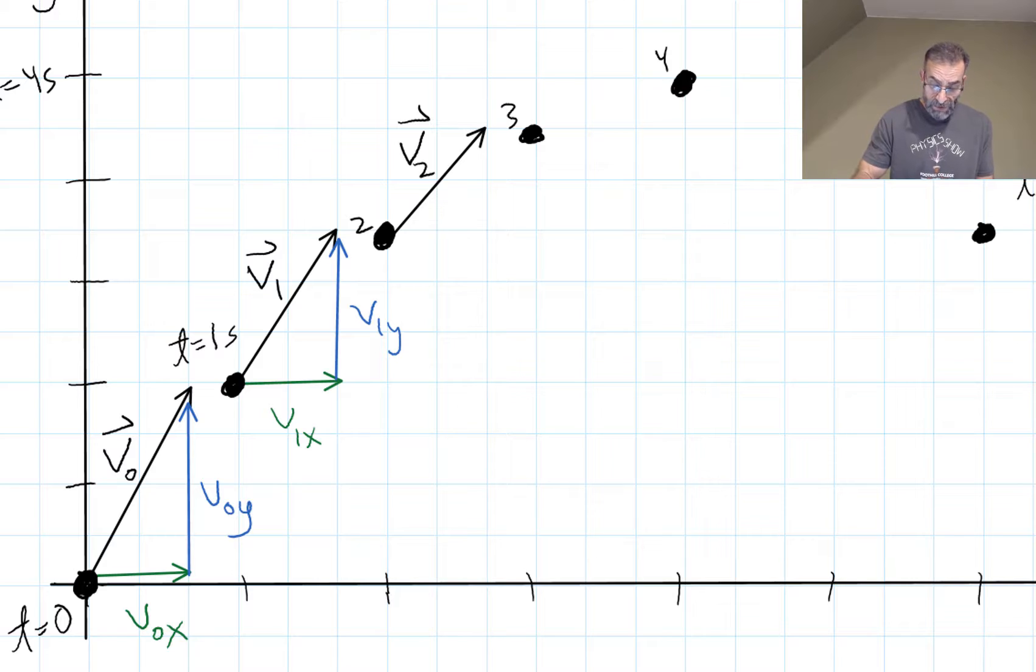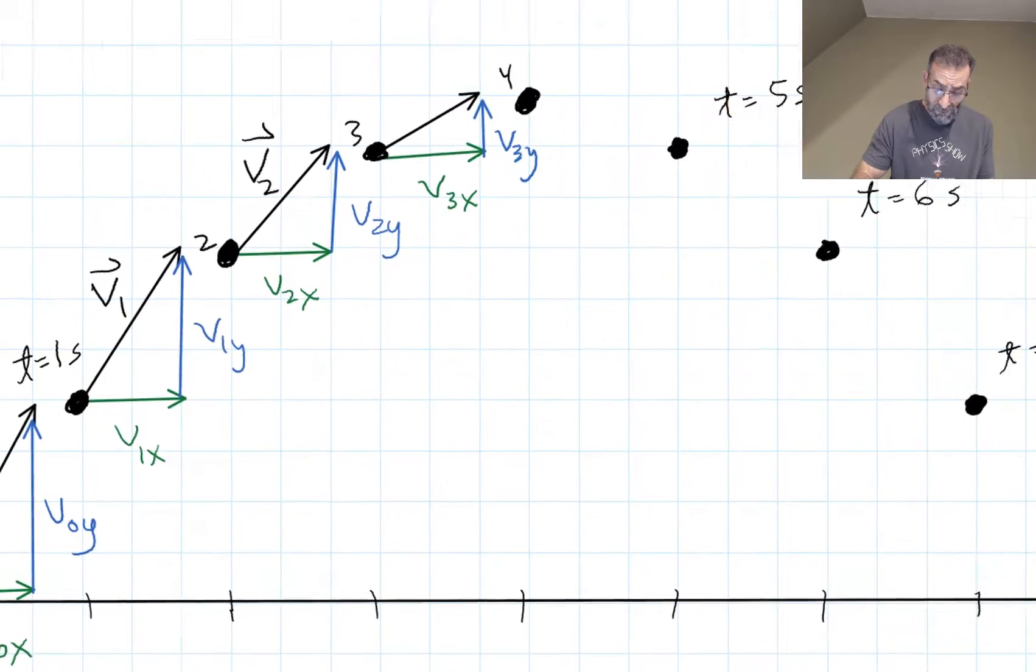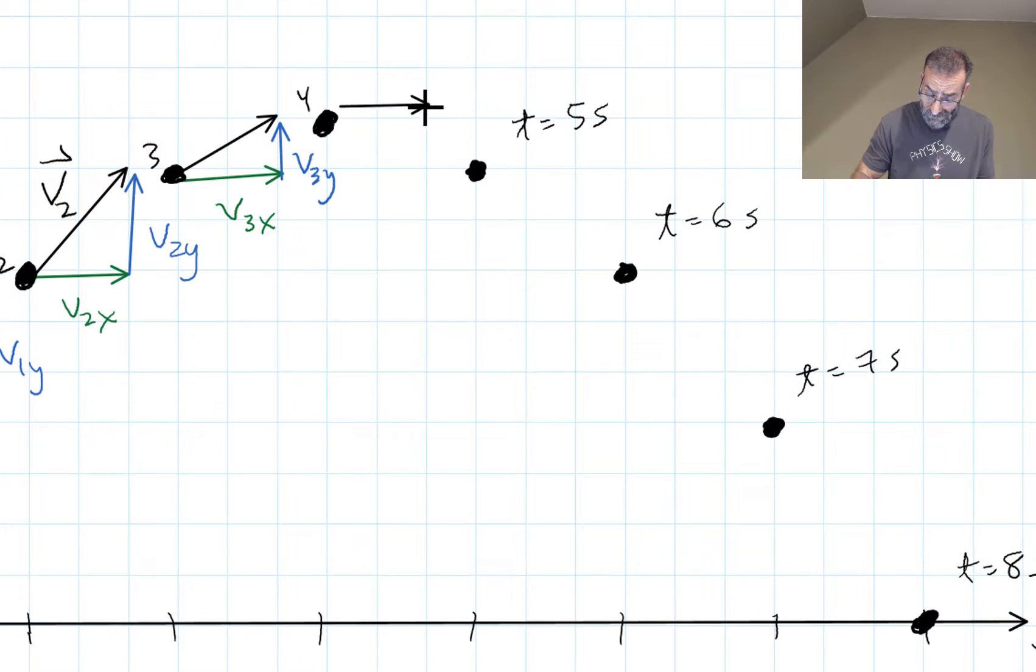And we can break up v2 into its x and y components. The x component is exactly the same. The y component is getting smaller and smaller. And when it hits the highest point, it's only traveling horizontally. The only component is horizontal. v sub x is equal to v total because v sub y is zero at that instant.